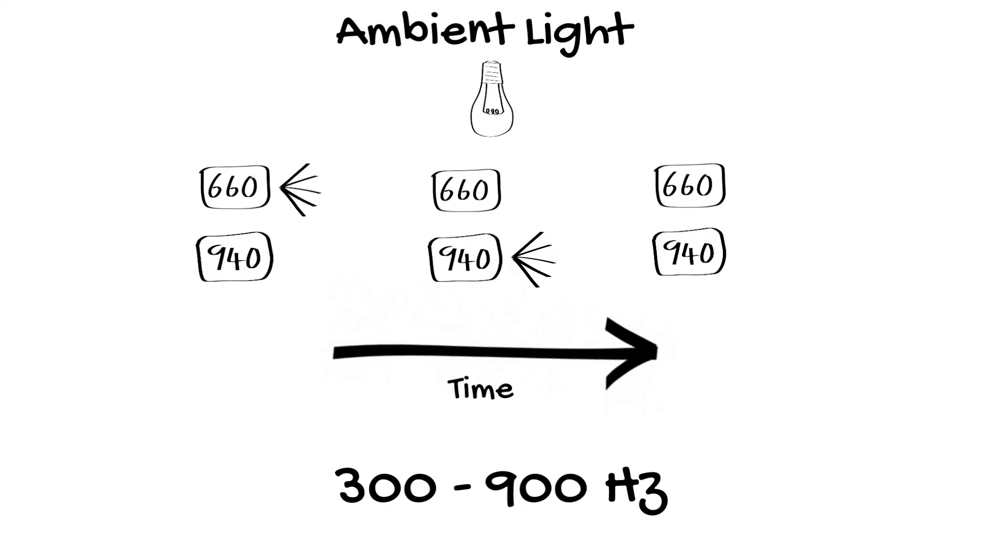During the time that both light emitting diodes are off, the computer calculates the effect of ambient light on the photodiode detector. It can then remove ambient light from the analysis of the signal.